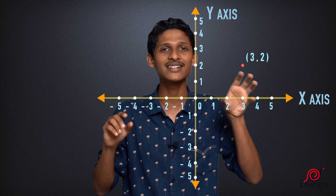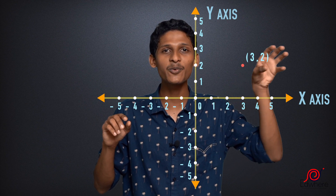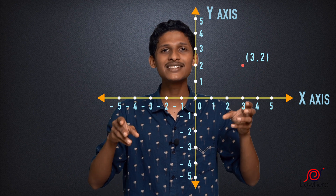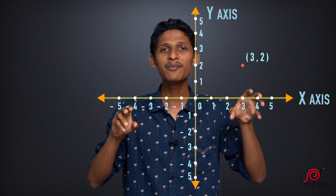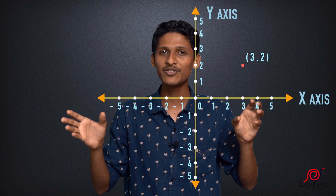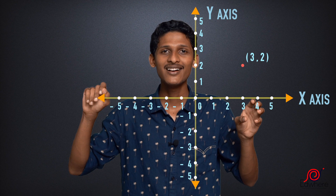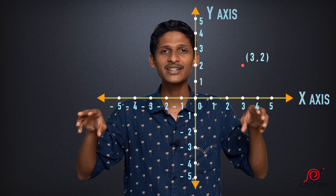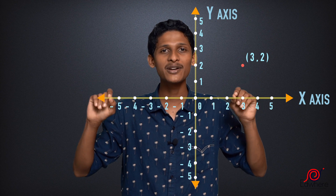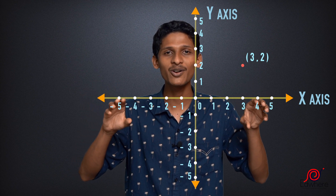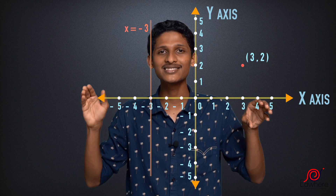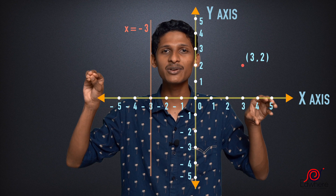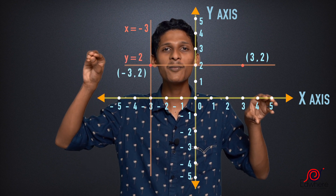So what about the coordinates in different quadrants? We can represent points where x value is positive and y value is positive, or where x value is negative and y value is positive. Now what point is at minus 3? The x value is minus 3 and the y value is 2. We are going to find out what that point is using the x-axis and y-axis.